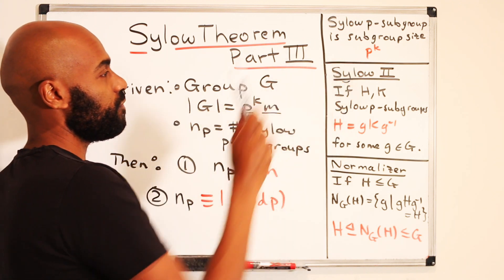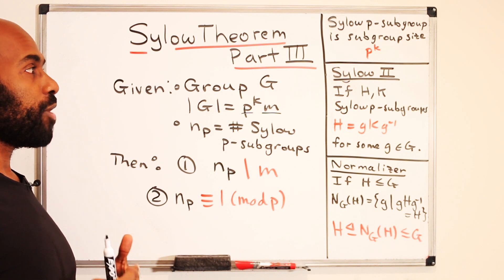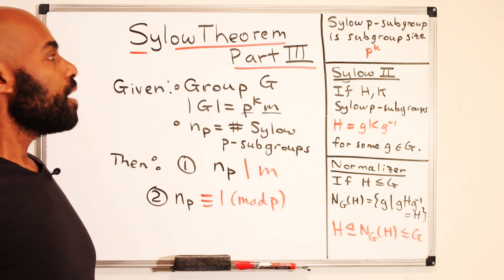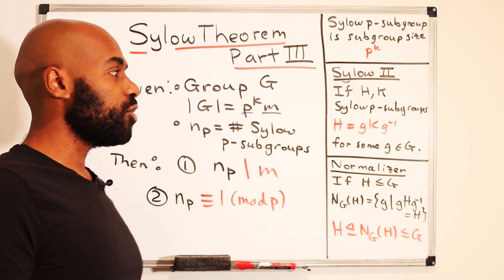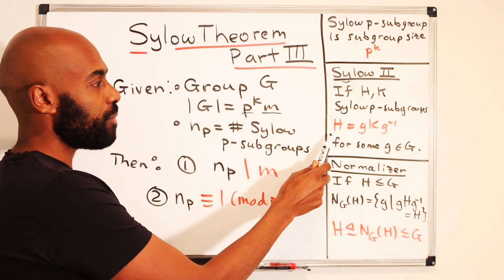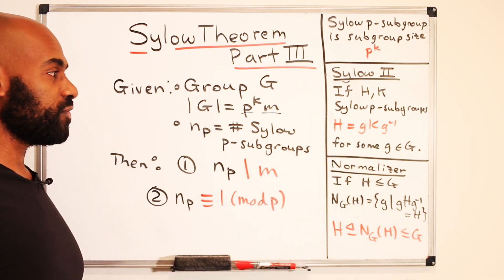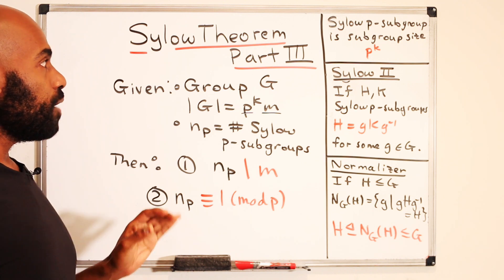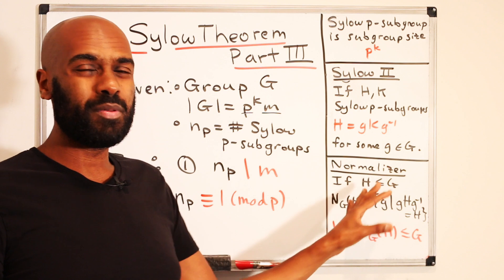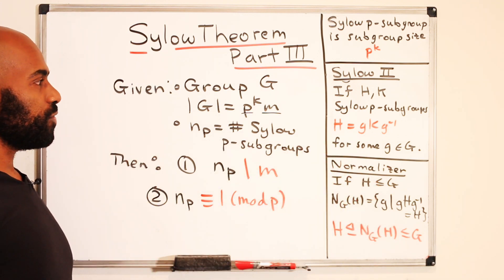A Sylow p-subgroup is a subgroup of size p^k. One key result we'll use heavily in part three is part two of the Sylow theorems, which states that if H and K are Sylow p-subgroups, they're related by conjugation: H equals gKg-inverse for some element g in the group. An important concept coming up is the normalizer.